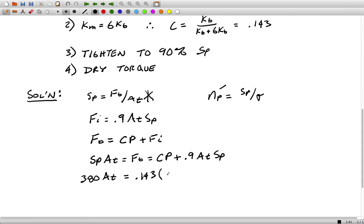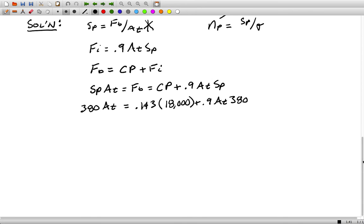...P in this case is eighteen thousand, plus 0.9 At times three eighty. Solving for At we get a value of sixty seven point seven millimeters squared.